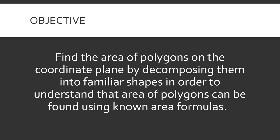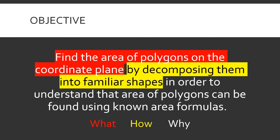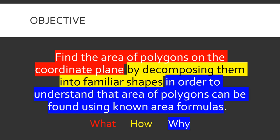Today we will be finding the area of polygons on the coordinate plane by decomposing them into familiar shapes in order to understand the area of polygons can be found using known area formulas. Now this is a long one so let's take a second and just break that down. So we're going to be focusing on polygons on a coordinate plane and being able to find the area of those polygons. And we're going to do this by breaking them down into shapes that you might be more comfortable with. We've worked on finding areas of different shapes already so this should definitely be more comfortable for you. Because using known area formulas is going to help us to better understand and make sense of the polygons that we may not be as familiar with.